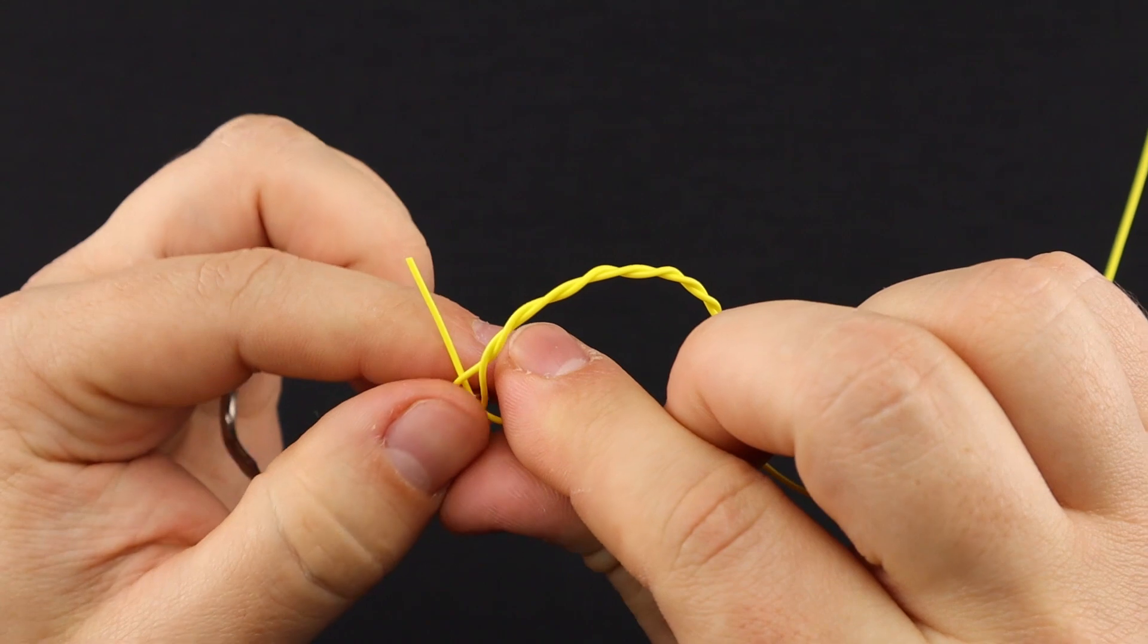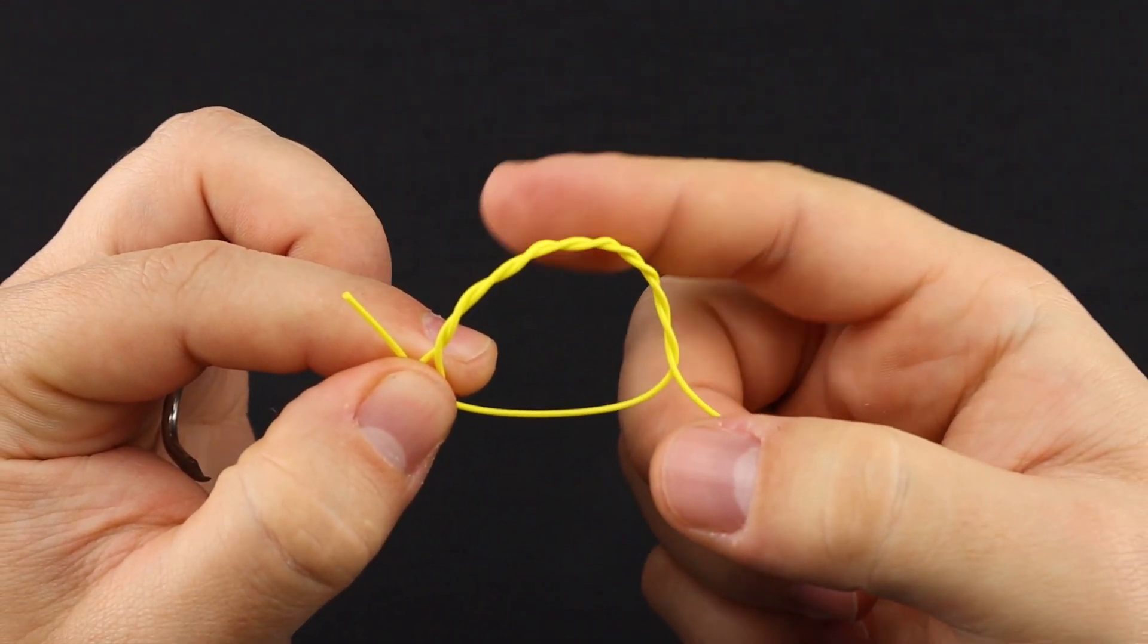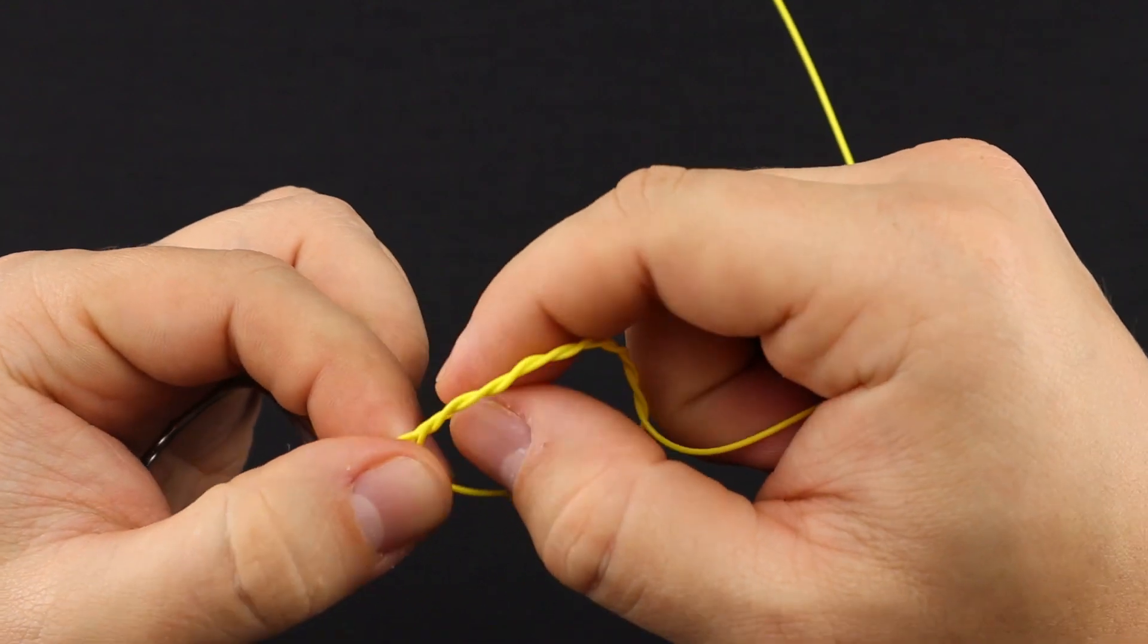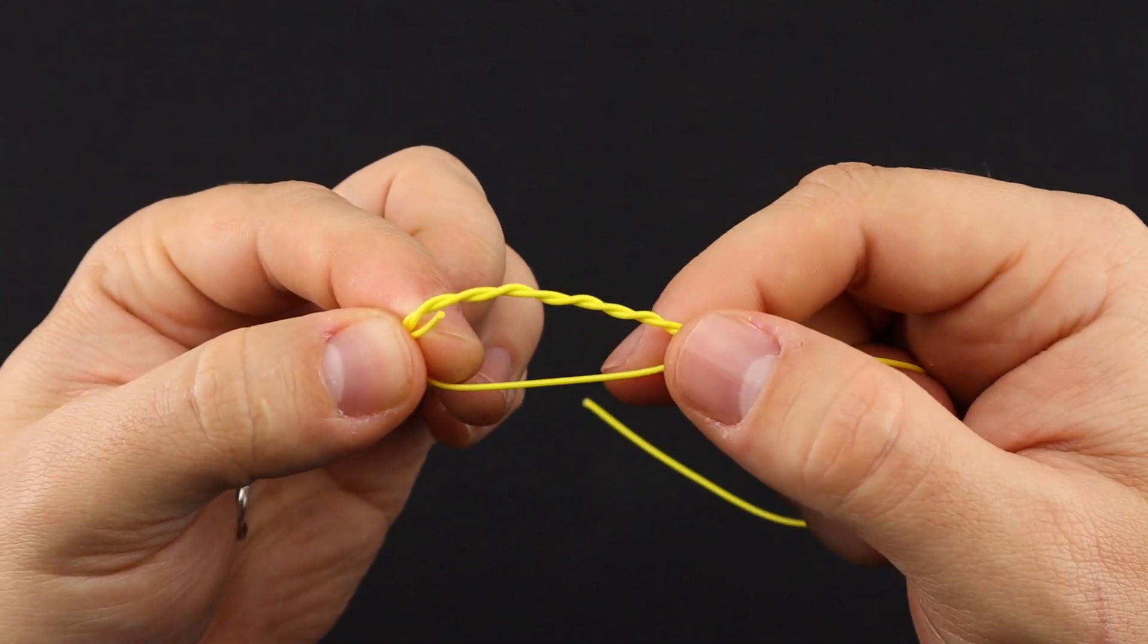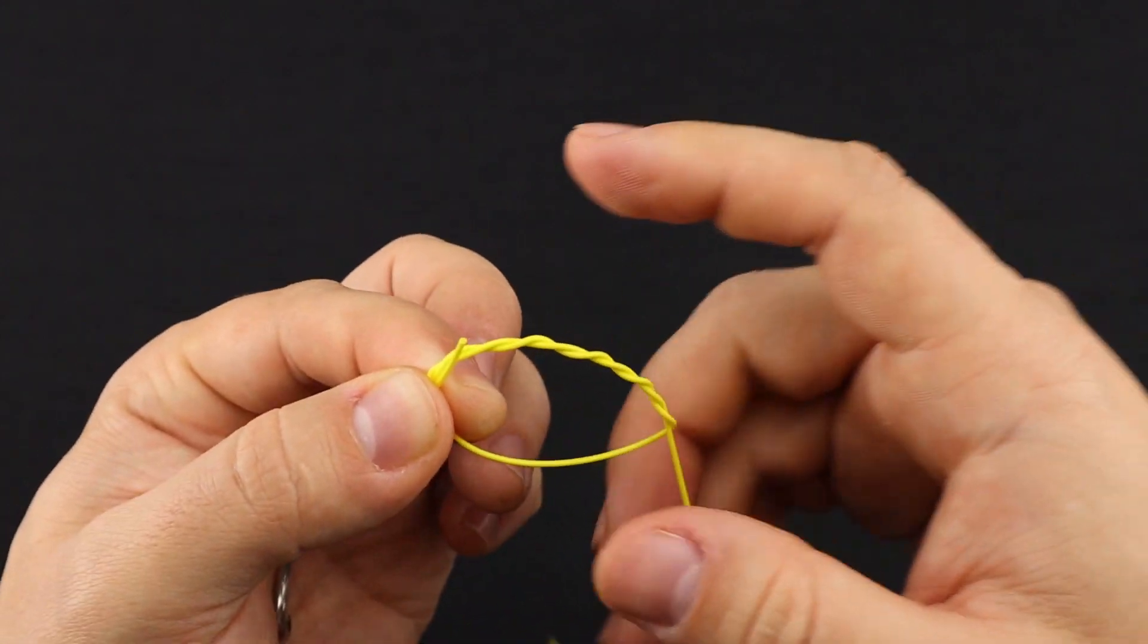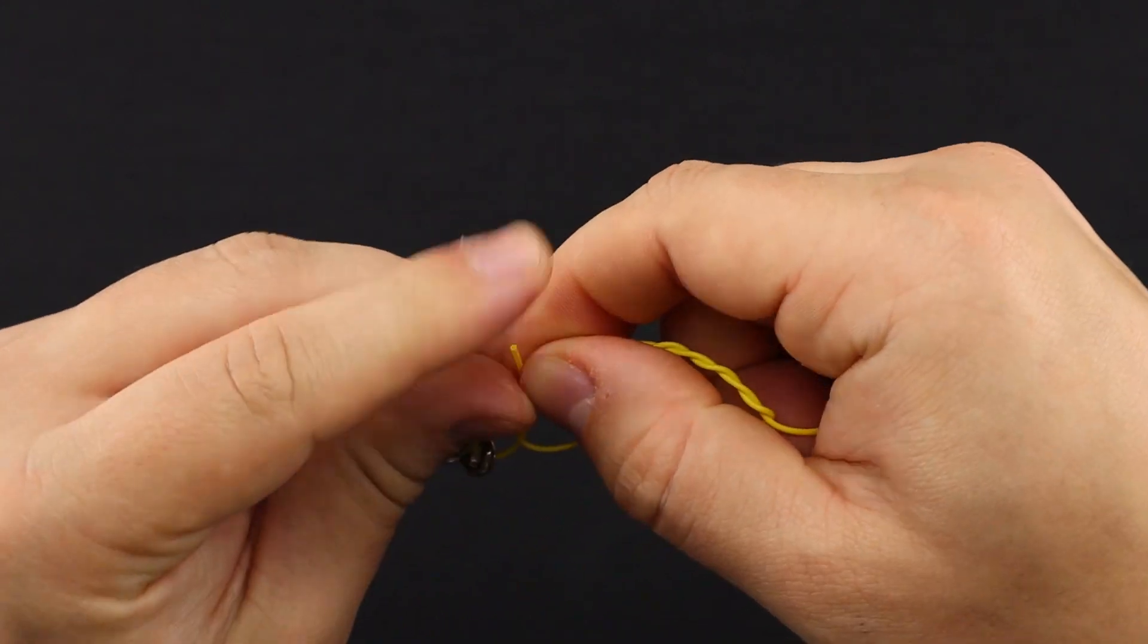And now when you do that maneuver there, you create this loop here and you're gonna place that tag end up and through that loop here just like so. Now the next step is you'll want to keep tension on this tag end just like so.